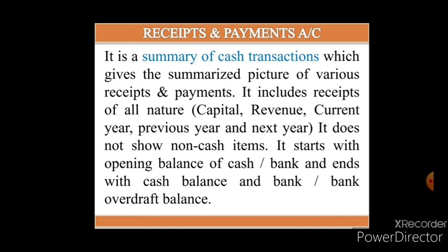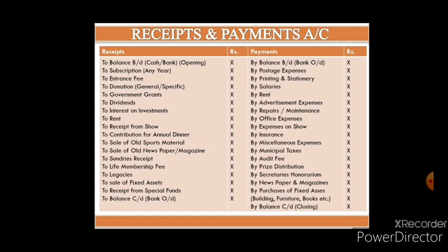It is a summary of the cash transactions which gives the summarized picture of the various receipts and payments. It includes receipts of all nature — whether they are of capital nature or revenue nature, whether they are related to any accounting year such as the current year, previous year, or next year. It does not show non-cash items. It starts with opening cash balance and ends with closing cash balance. This is the format of receipts and payment account. You can see that LHS consists of receipts and RHS consists of payments. All receipts are recorded on the debit side and all payments are recorded on the credit side, irrespective of the time period and irrespective of the nature, whether capital or revenue.